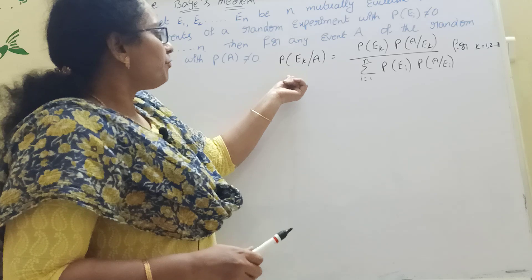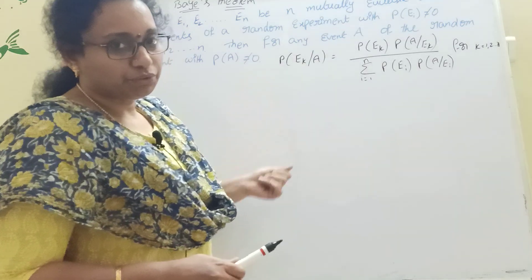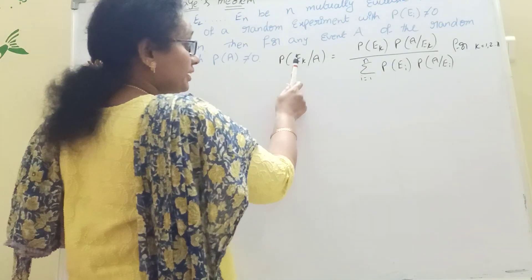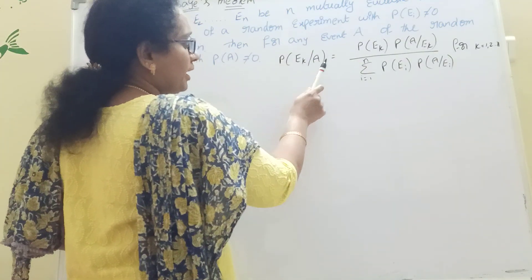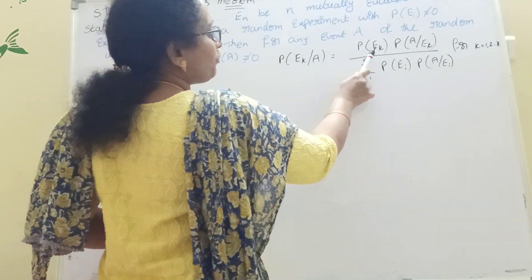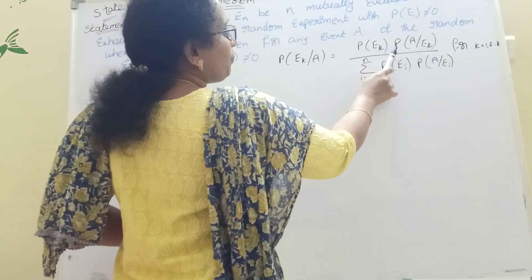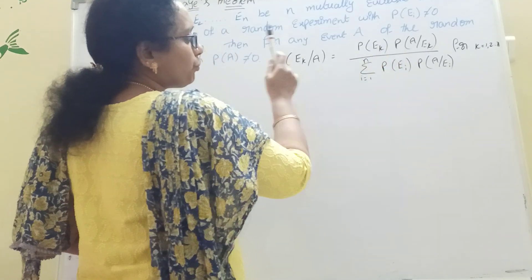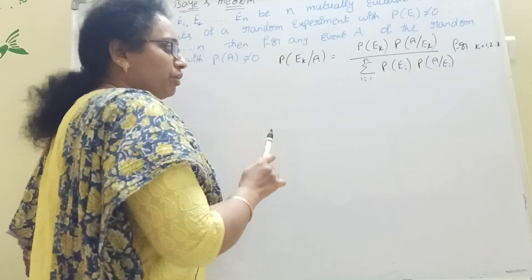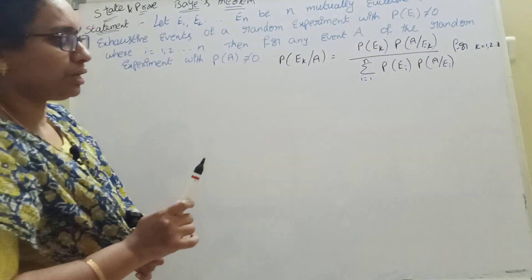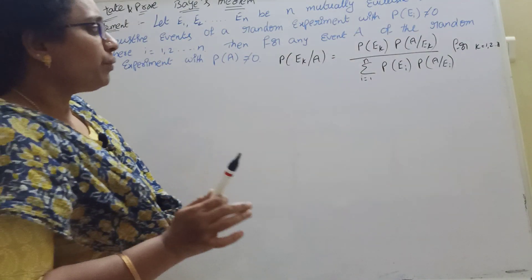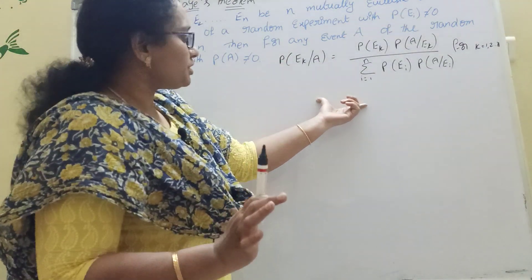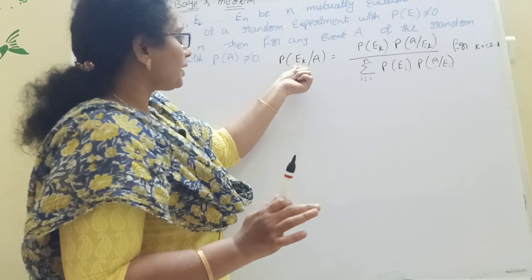P of Ek given A. This is what I will show you. P of Ek given A equals P of Ek times P of A given Ek, divided by sigma i equals 1 to n of P of Ei times P of A given Ei. We will show you that in this video.